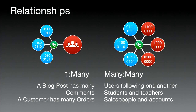The second kind of relationship is many-to-many. The canonical example in modern apps is users following one another — I'm following everybody in the front row. Another example is students and teachers: a student can have many teachers, and a teacher can have many students. The example I'll use later is a salesperson can have many accounts, and a given account can have more than one salesperson assigned to it.